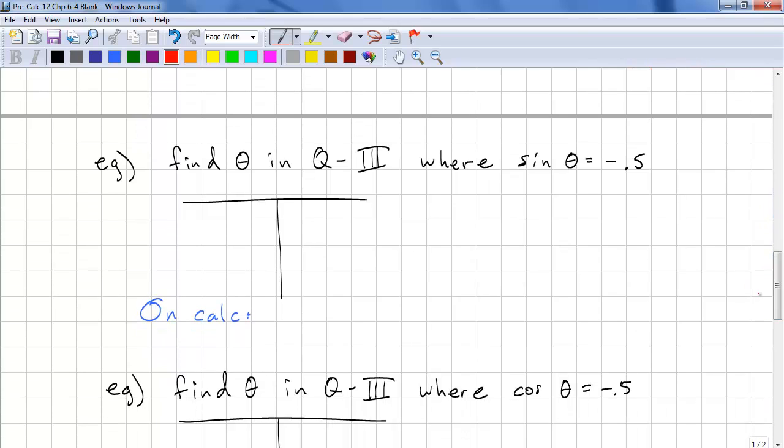Here are some example problems. Find theta in quadrant 3 where sine equals negative 1 half. That's quadrant 3. And sine. Remember, this is our y value. Negative 0.5. And we have 1. And this is theta prime because it's our reference angle.